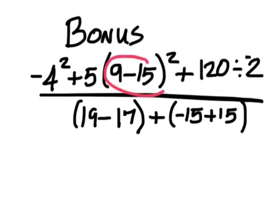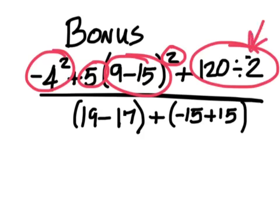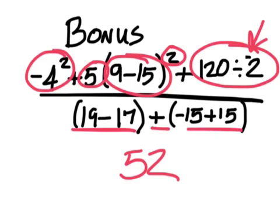For the bonus: 9 minus 15 is negative 6, squared is 36, times 5 is 180. 180 minus 16 is 164. 164 plus negative 60 is 104. And then when you divide by 2 you come up with 52, because this plus this is 2, so you have a 2.